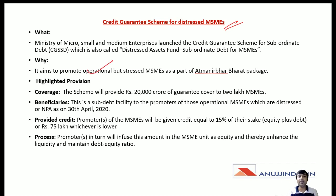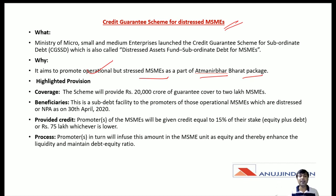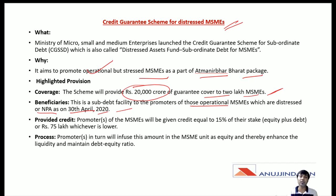The credit guarantee scheme for distressed MSMEs aims to promote operational but stressed MSMEs as part of the Aatma Nirbhar Bharat package. This scheme will provide 20,000 crore of guarantee cover to 2 lakh MSMEs. It is a sub-debt facility to the promoters of those MSMEs which are distressed or having NPA as on 30th April 2020.